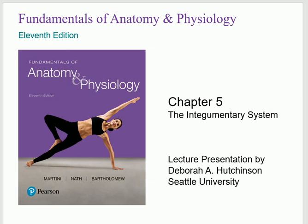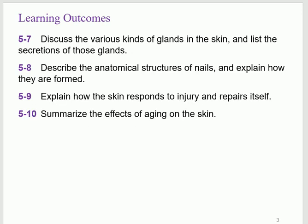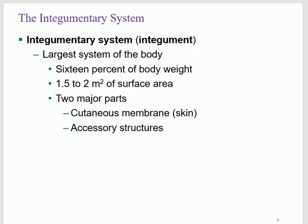Chapter five is the integumentary system. Integument means cover — the covering system. These are the learning outcomes we will be going through. Integument is the largest system of the body, and it has two parts: the cutaneous membrane — cutaneous being another name for skin — and the accessory structures, which are structures related to the skin.